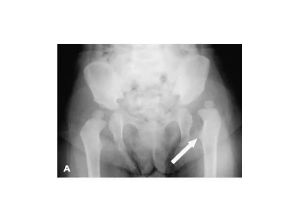In this pelvis x-ray of a child, you can notice that on the right side there is a normal relationship between the femoral head and acetabulum, while on the left side, where the arrow is pointing, the hip joint is dislocated.